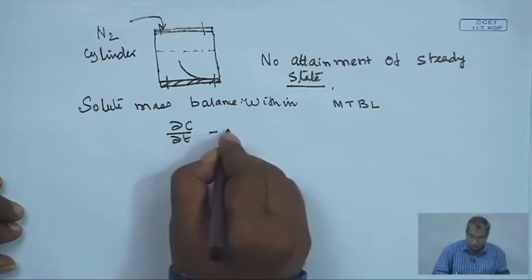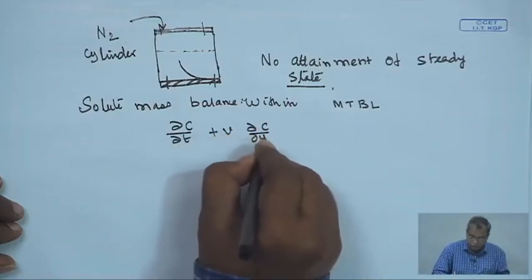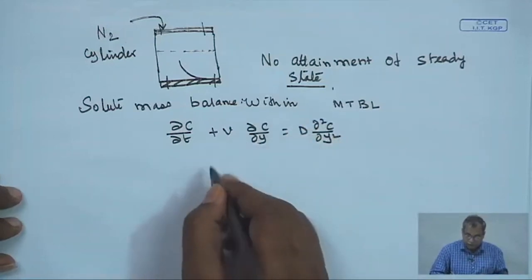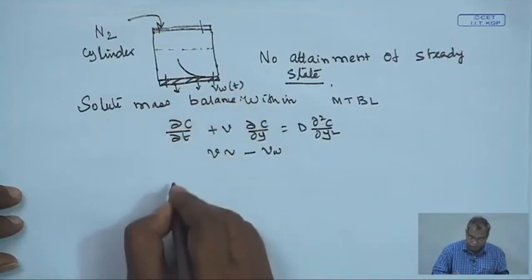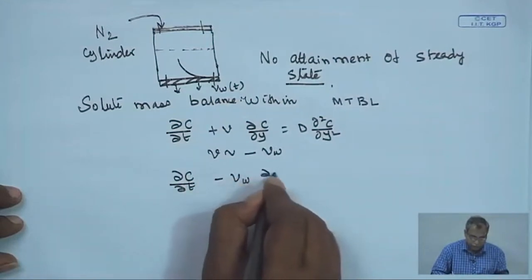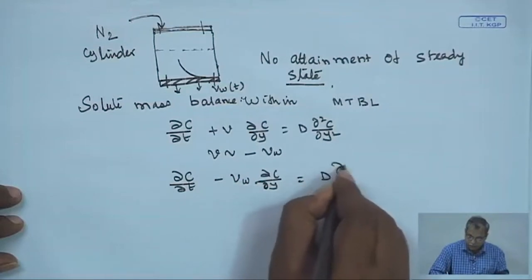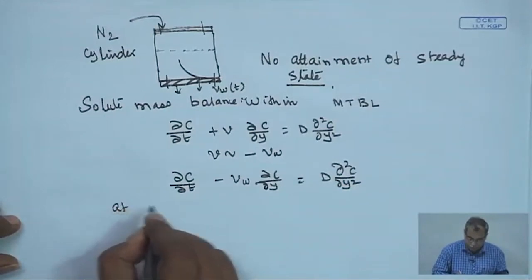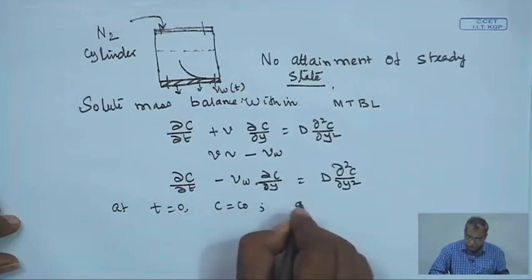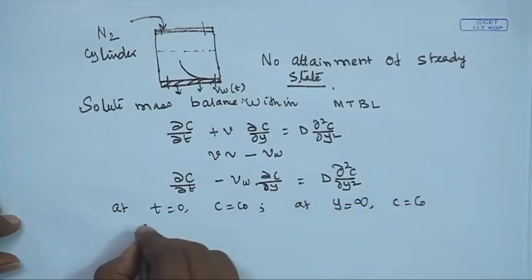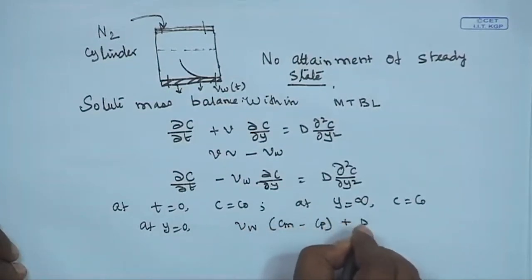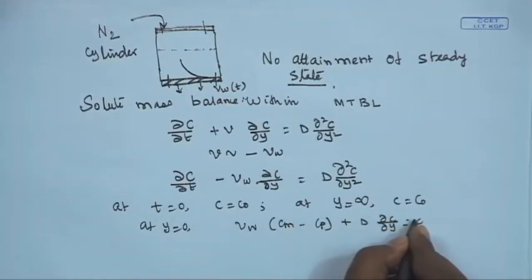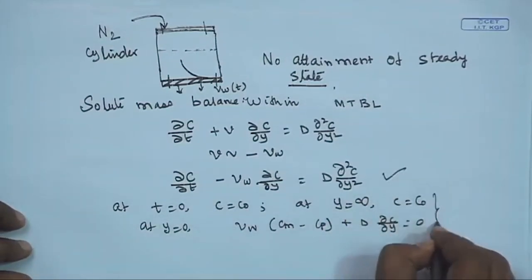Writing the solute mass balance: ∂c/∂t − Vw·(∂c/∂y) = D·(∂²c/∂y²). Since the mass transfer boundary layer will be small, we can assume v = −Vw. So: ∂c/∂t − Vw·(∂c/∂y) = D·(∂²c/∂y²), where Vw is a function of time. The boundary conditions are: at t = 0, c = c₀; at y = ∞, c = c₀; and at y = 0, the pseudo-steady state condition: Vw·(cm − cp) + D·(∂c/∂y) = 0.